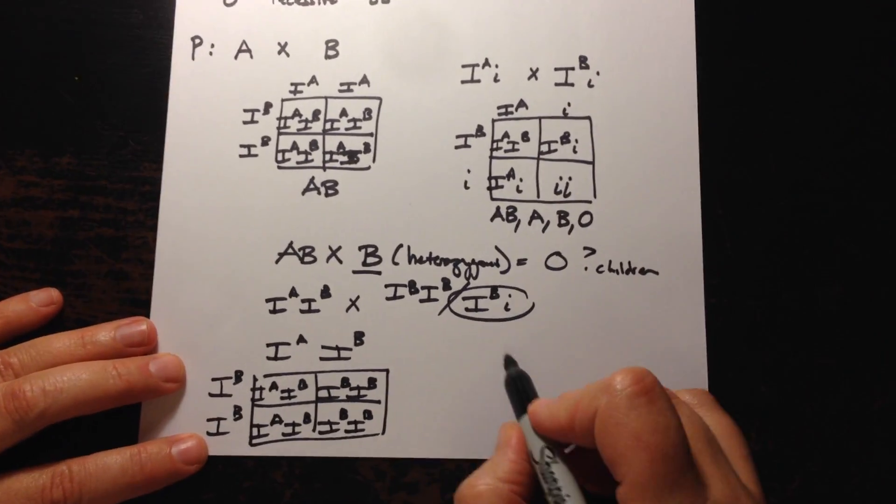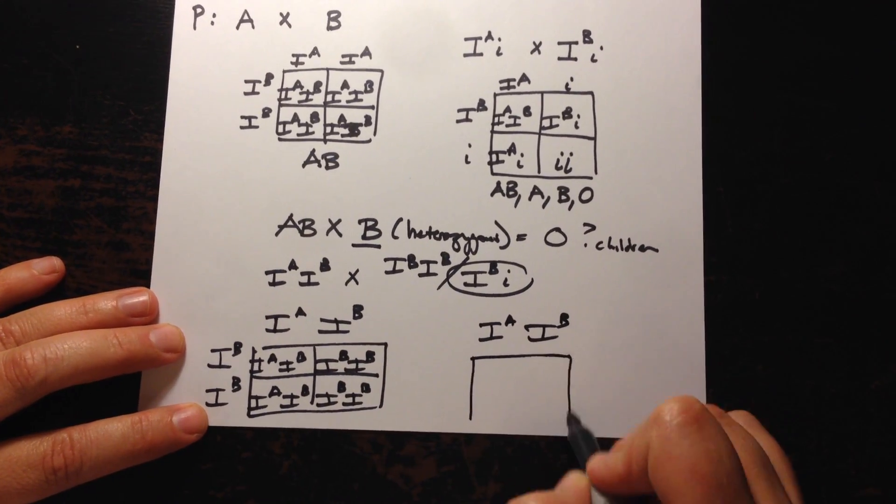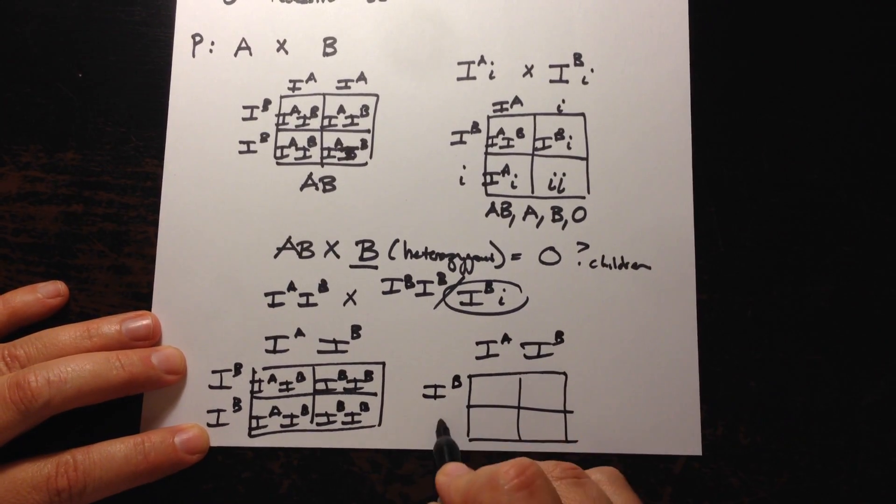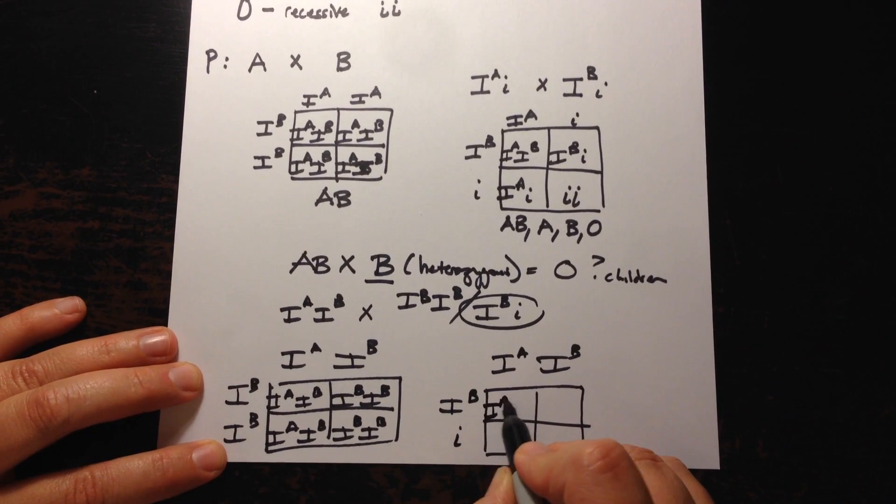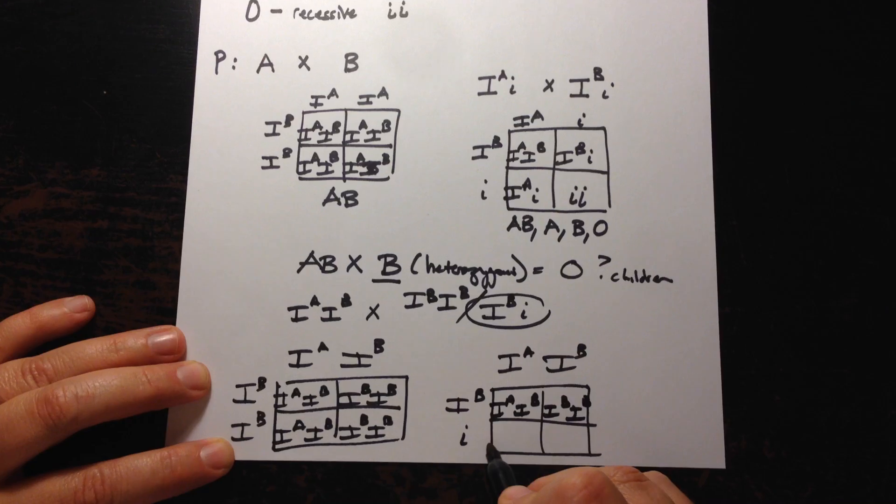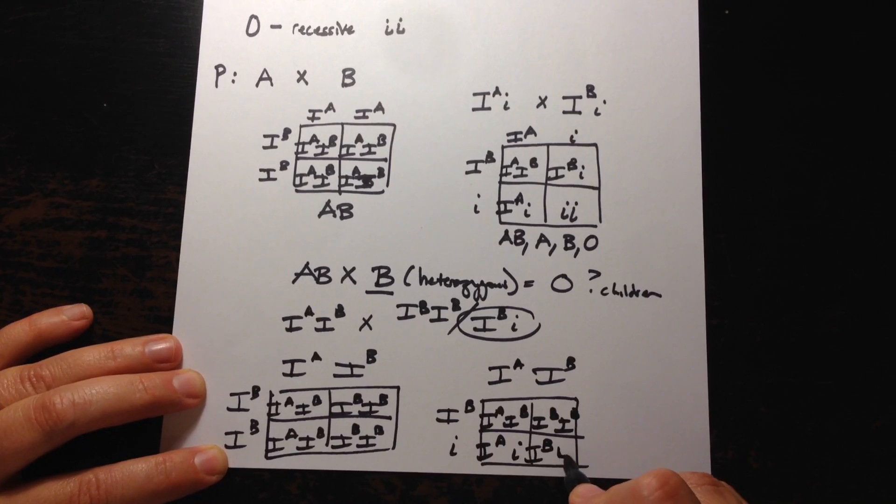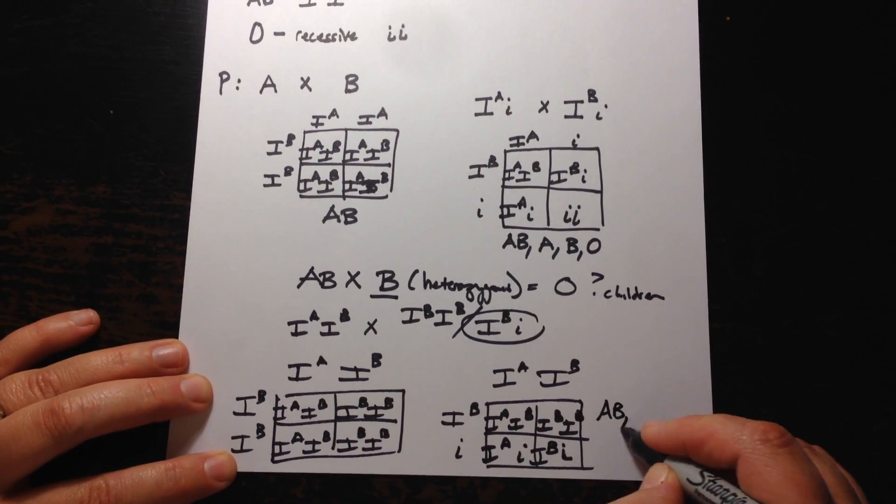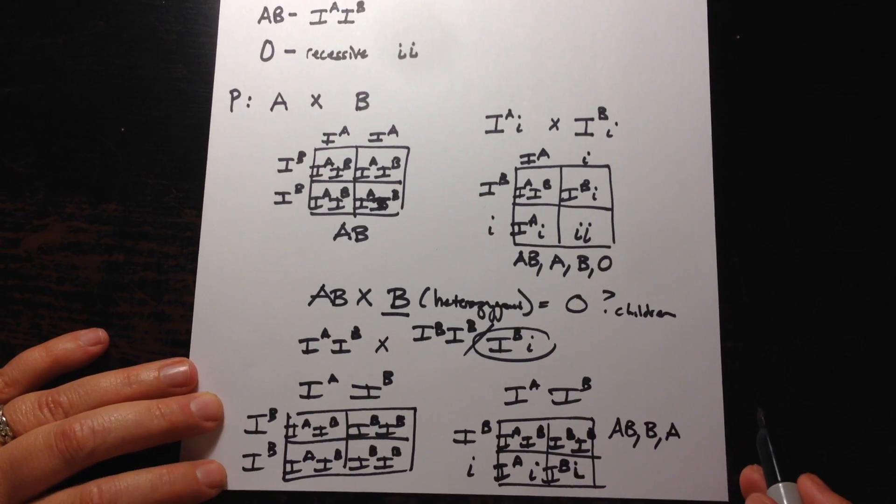But what if we consider this type? Is it going to change anything? Well let's put I^A I^B there at the top of our Punnett and we put this one here on the side, the type B heterozygous. Let's combine those alleles and then you'll notice that we can make type A blood and type B blood, both of the heterozygous kind. We can also make AB and the homozygous B type but still no type O.